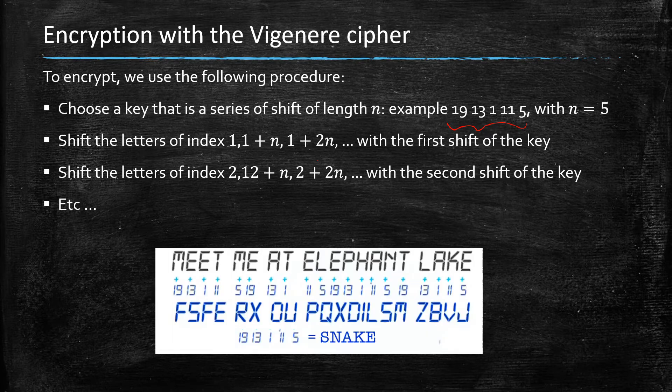What it means is two consecutive letters, you're never getting the same shift. It just repeats every n letters, in this case n being equal to 5. So for example, here you see with 19, 13, 1, 11, and 5, the M gets mapped to F through a shift of 19, but E gets mapped to S by a shift of 13.